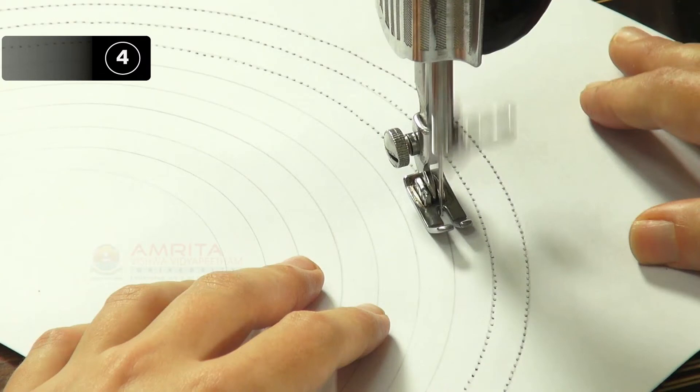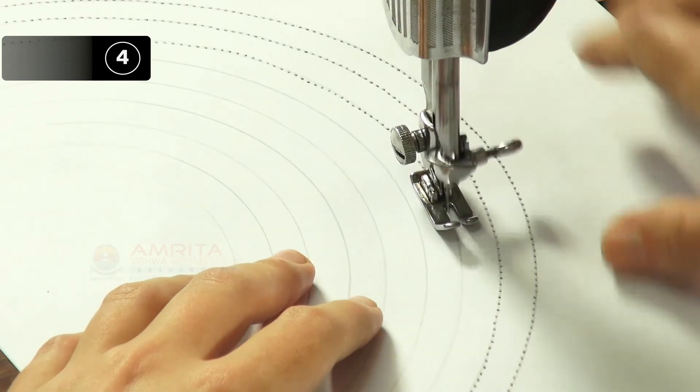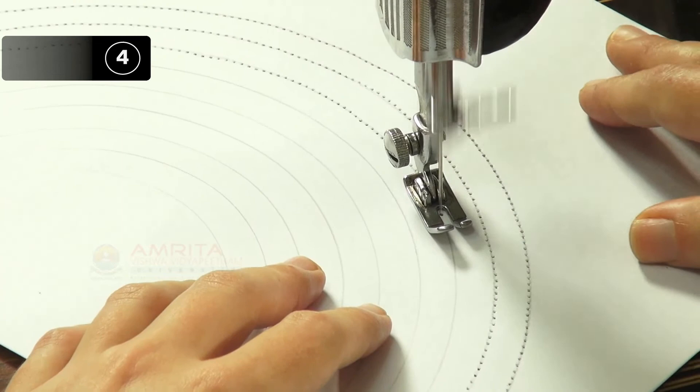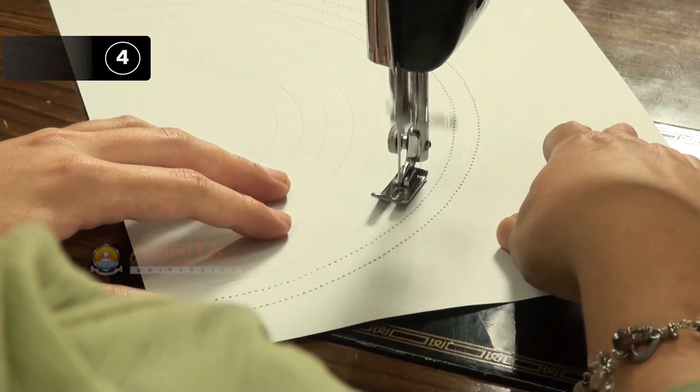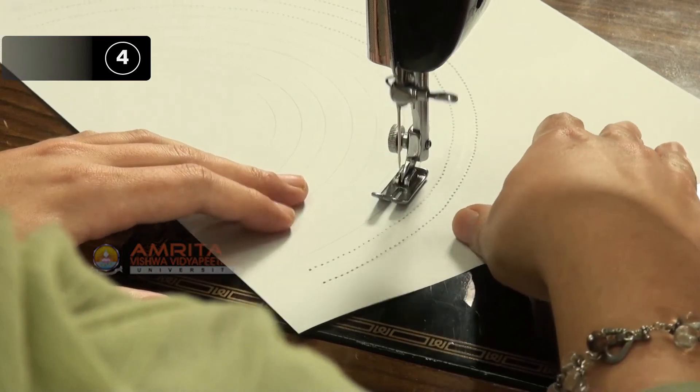Step 4: Move the paper in a circle as the stitching progresses. While guiding the paper, you will have to continuously move it in a circle so that you can follow the drawn curved lines.